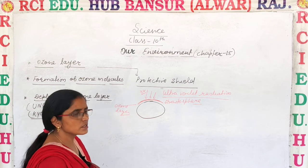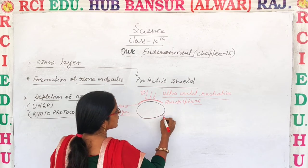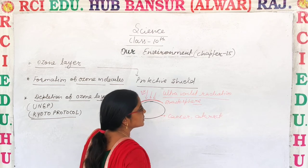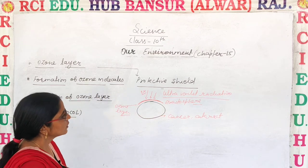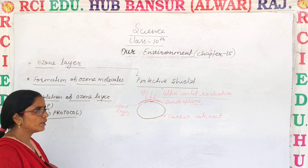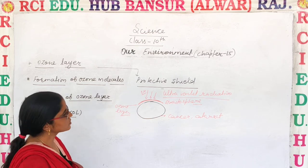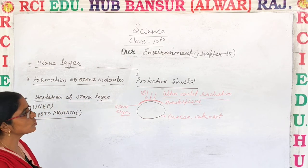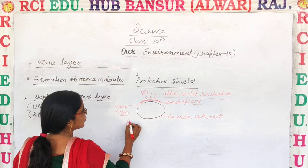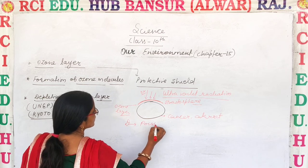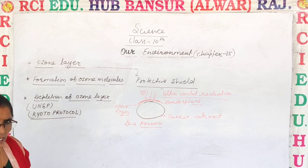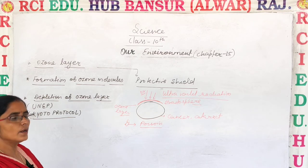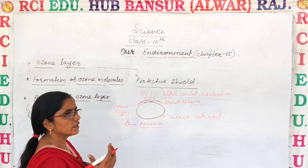Ultraviolet radiations reaching directly to the earth can mainly cause cancer, cataract, skin pigmentation, and allergies. The ozone layer is a protective shield which protects plants, animals, and human beings. However, if ozone is present at the ground layer, it is deadly poison — we cannot inhale or use it directly.